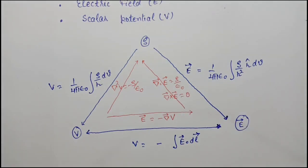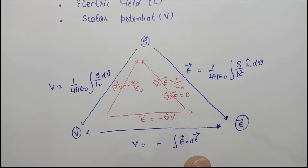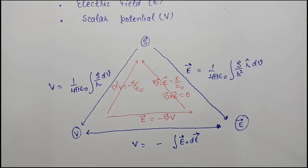So finally, here we have three integral relations and four differential relations between the three quantities — that is rho, E, and V. Thank you.